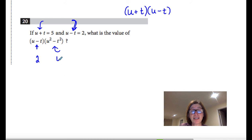So if I factor this into u plus t, u minus t, I can substitute the values right into this equation. So 2 times 5 times 2. So 10 times 2 is equal to 20.